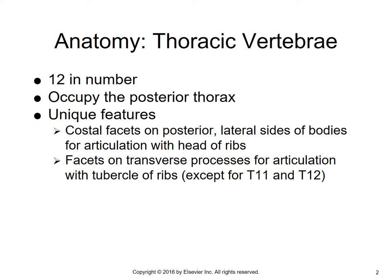Remember, the ribs attach to your thoracic vertebrae. The head of the rib attaches to the lateral side of the body, and the vertebrae also has facets on the transverse processes for articulations with the tubercle of the ribs — for all of them except T11 and T12. So you have a facet on the body for the head of the rib and a facet on the transverse process for the tubercle of the rib.